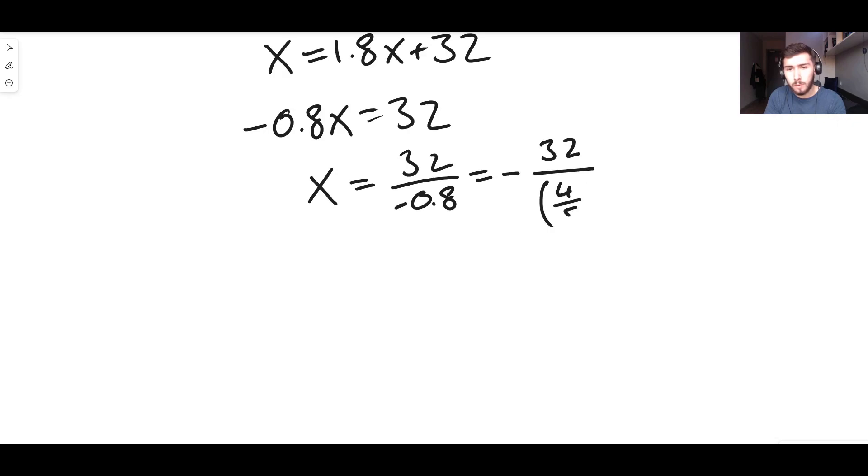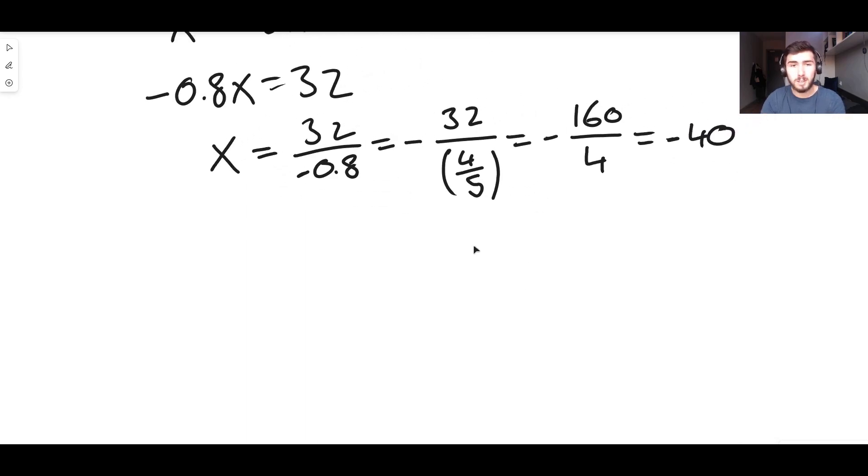Then what you can do is multiply the numerator and the denominator of this fraction by 5. 32 times 5 is 160, and 4 over 5 times 5 is 4. Negative 160 over 4 is just negative 40. So what this means is when it is negative 40 degrees, everyone agrees that it is negative 40 degrees.